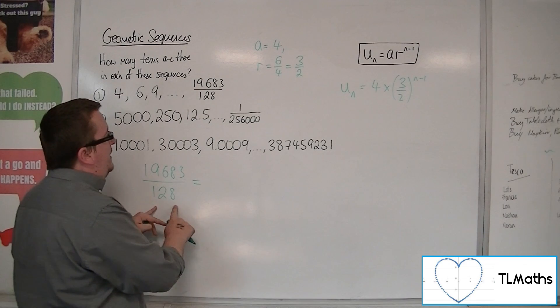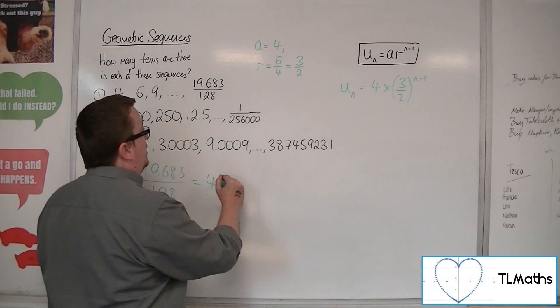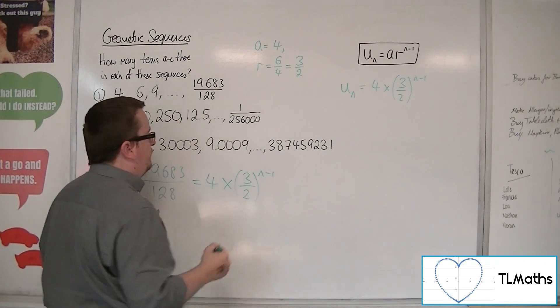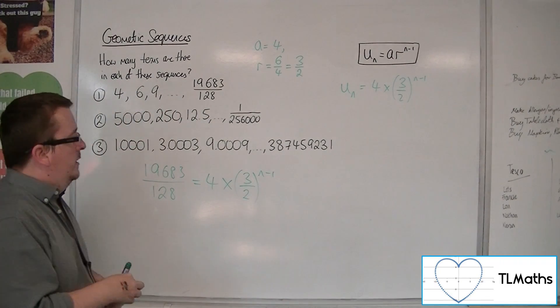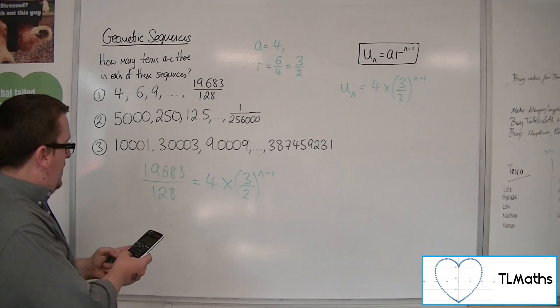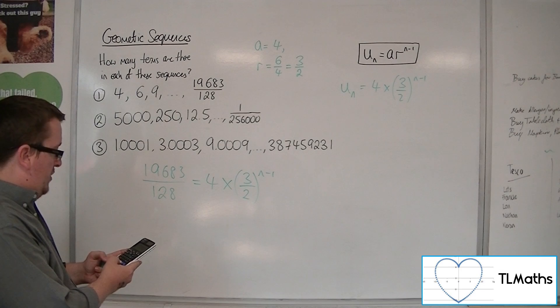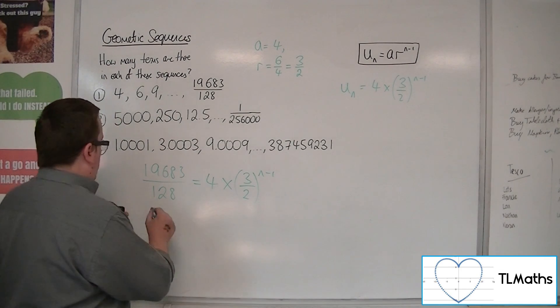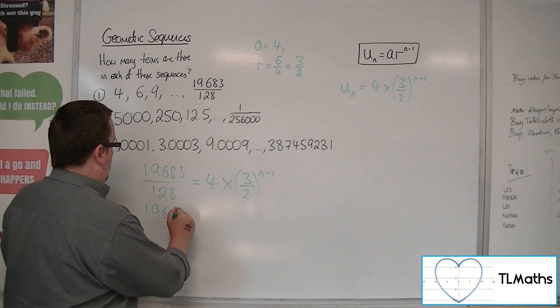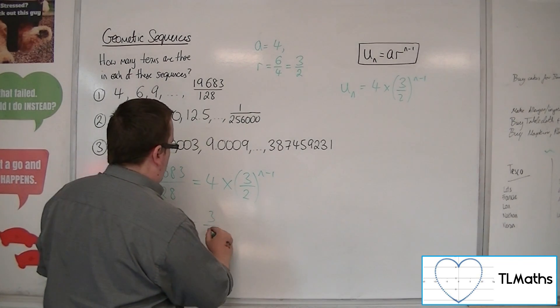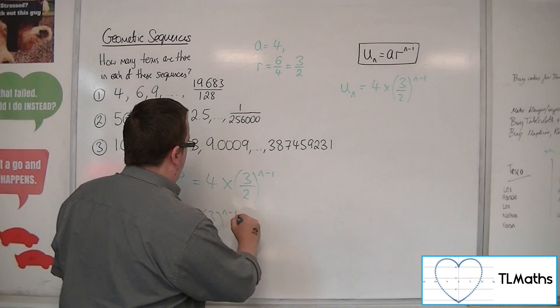And that must be the nth term that we're looking for. Okay, what n will get me that? So I need to solve this equation. So the first thing that I would want to do is divide both sides by 4. So 19683 divided by 128 divided by 4 gets to be 19683 over 512. And that is 3 halves to the n minus 1.